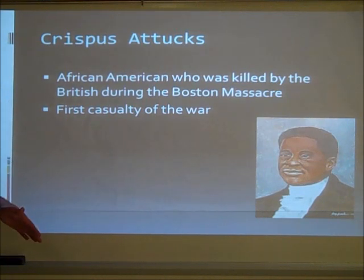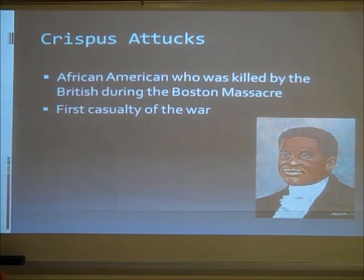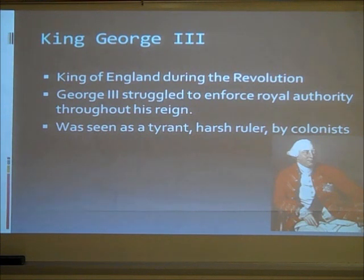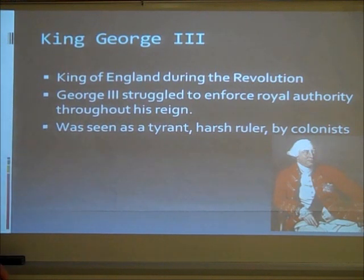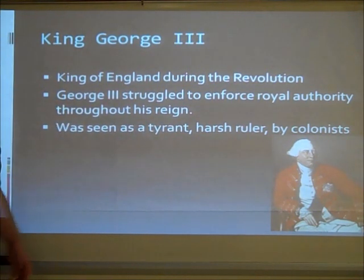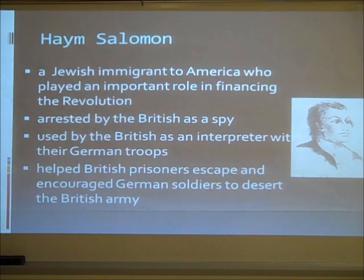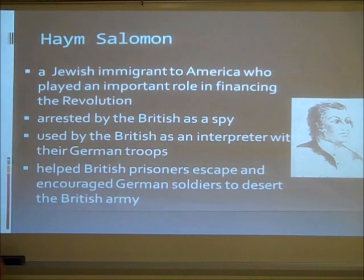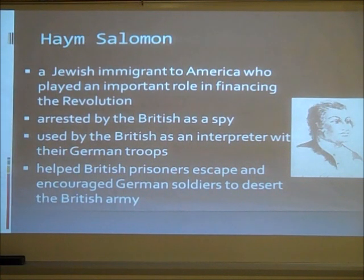Crispus Attucks was the first person killed in the Revolutionary War — specifically the first person killed at the Boston Massacre. King George III was the King of England who struggled to enforce his authority throughout his reign. The colonists did not like him and saw him as a tyrant, which eventually led to declaring war against him. Haim Solomon was a Jewish immigrant who played an important role in financing the revolution. He was arrested by the British as a spy but escaped, and he helped British prisoners escape and encouraged German soldiers to desert the British army.